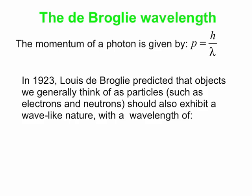So that's the momentum of a photon. And then in 1923, Louis de Broglie predicted that objects we generally think of as particles, such as electrons, neutrons, things like that, should also exhibit a wave-like nature. He simply turned this equation around and said the wavelength of a particle is H — Planck's constant — divided by the particle's momentum. And for particle-like objects we can write momentum in the MV form, so lambda equals H over MV. That's the wavelength of a particle — just an object we generally think of as a particle.